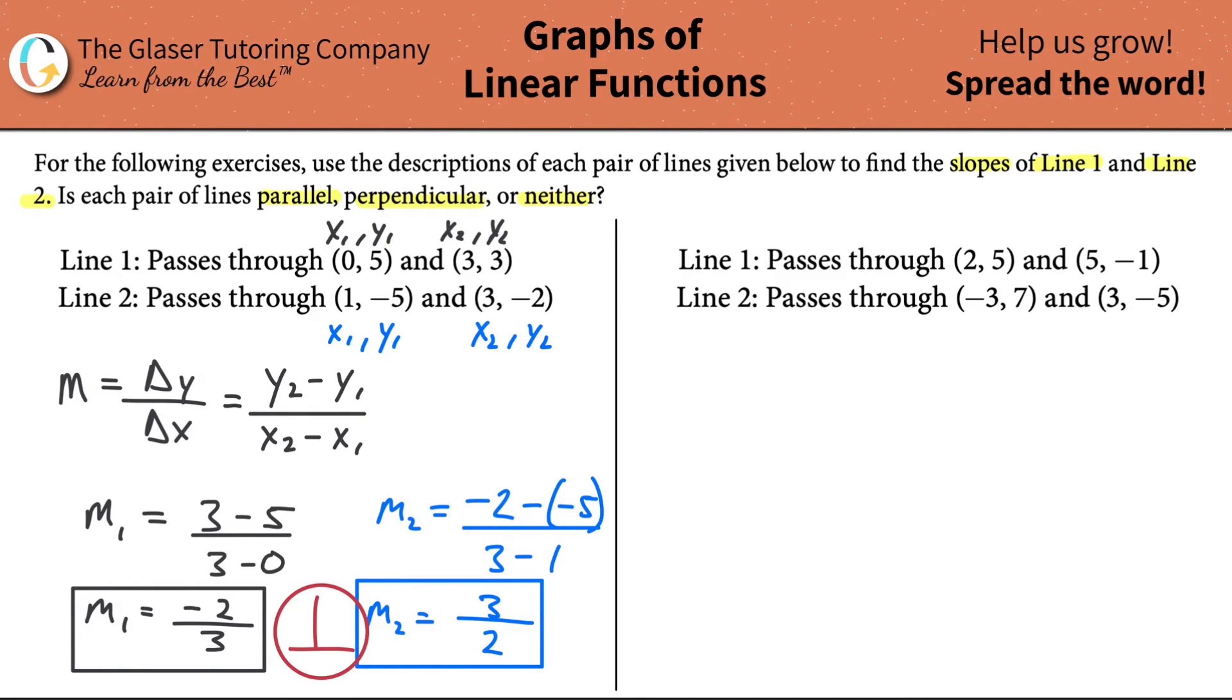Now, let's see how fast we can apply this process by going through the second problem. Let's find the slope of line 1. Again, they gave us two points, so we know we're going to be using our slope formula, change in y over the change in x, which works out to be y2 minus y1 over x2 minus x1.